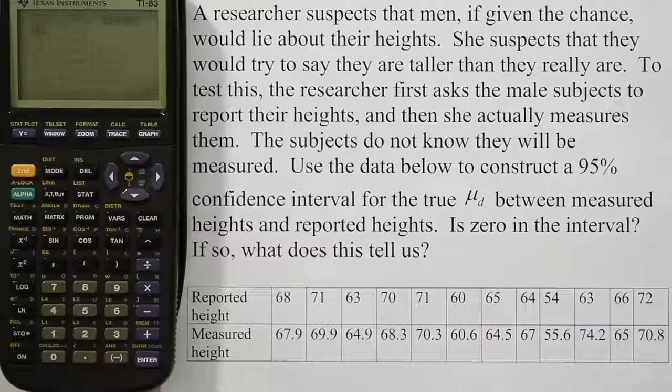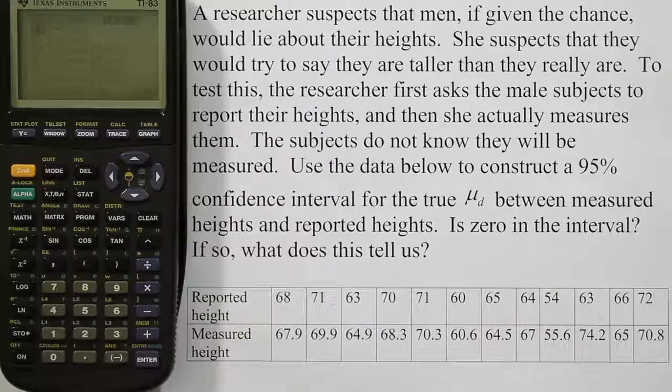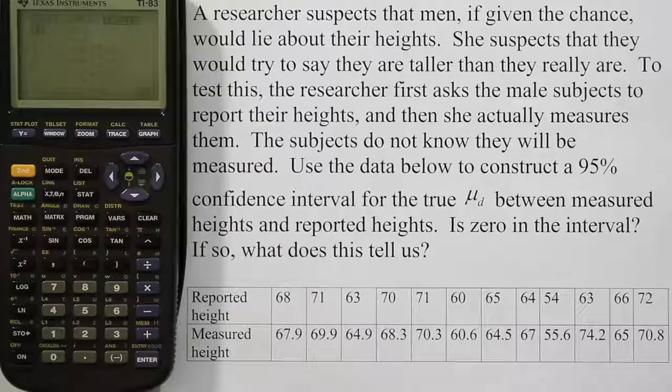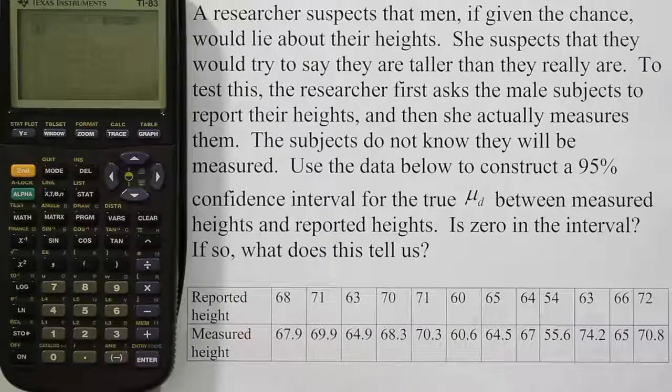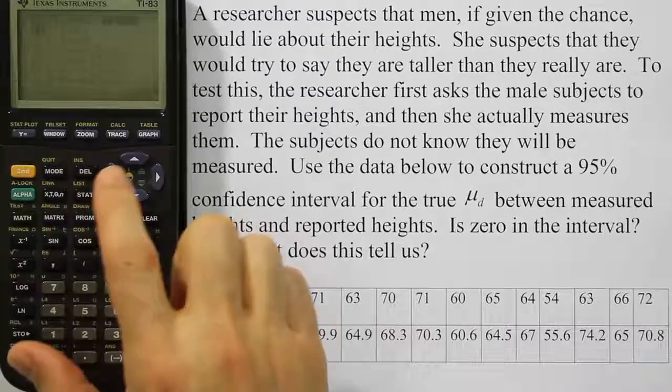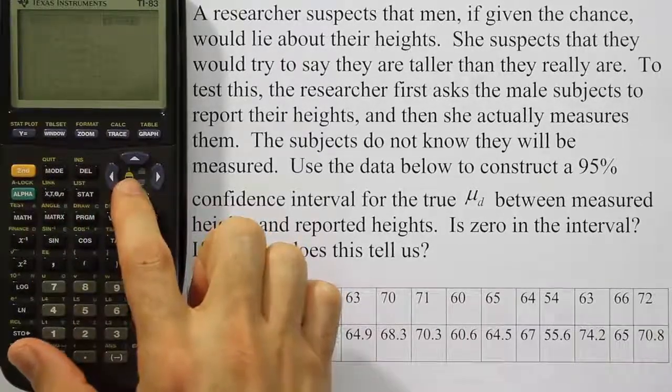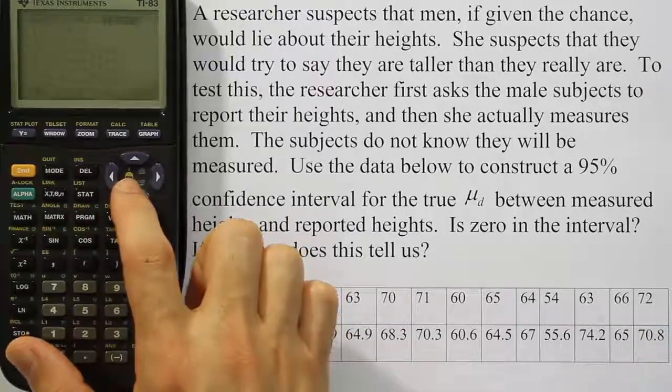Now we're going to be constructing a T interval because remember, once you subtract and do all the differences, all you have to do is conduct a T interval, or if you're doing a hypothesis test you just do the T test. So that's what's nice about this matched paired procedure. You basically reduce everything down to a simple T test or T interval.